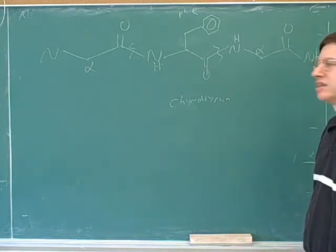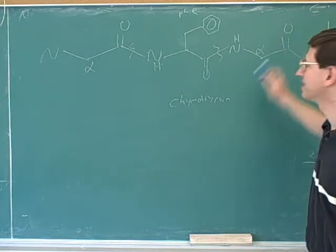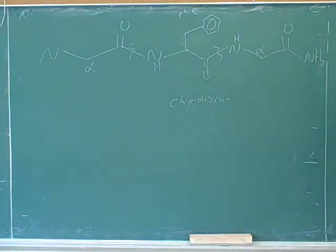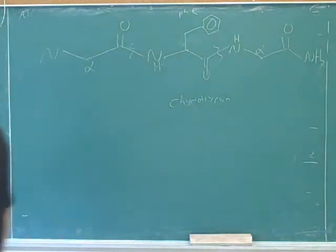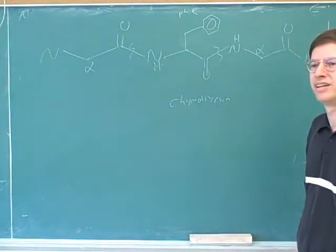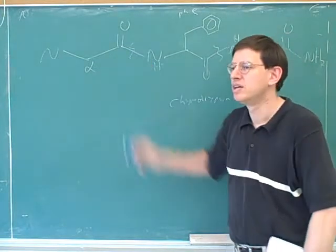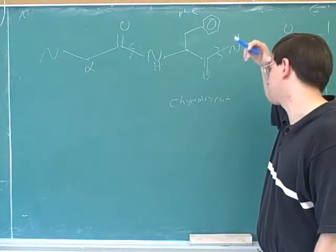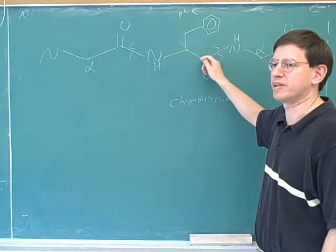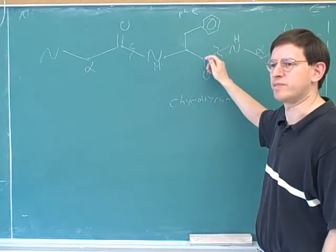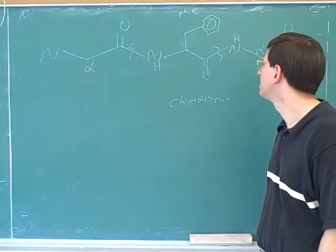Remember that chymotrypsin cleaves on the carboxy side. This is the carboxy side, not this one. I think what's also confusing is that it's always the amide bond that it cleaves. The carboxy side is this side — it's the side with the carboxy carbon, connected directly to the amide. There's an amide over here as well, so how do we know this is the carboxy side? This is the side with the carboxy carbon — it's in relation to that phenyl group.